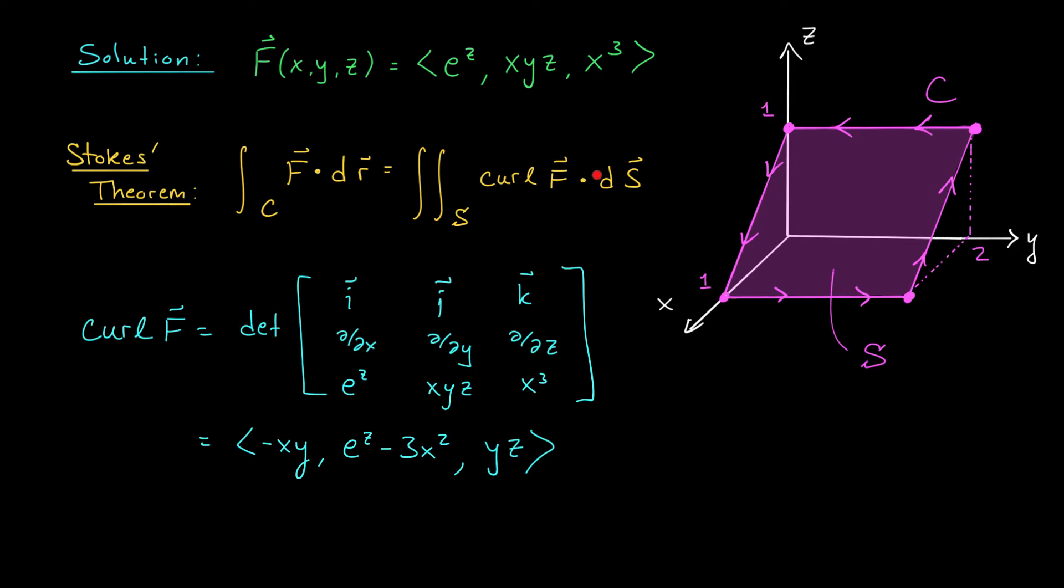All right, we know the vector field that we're going to be integrating, but we still don't know much about this surface S. If we want to compute this surface integral, we're going to have to find a parametric equation that traces our surface. Well, notice that S is part of the plane that passes through these four points. So I guess we could find the equation of the plane by using the techniques from the very beginning of our course.